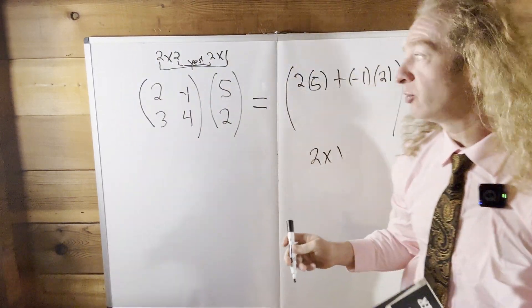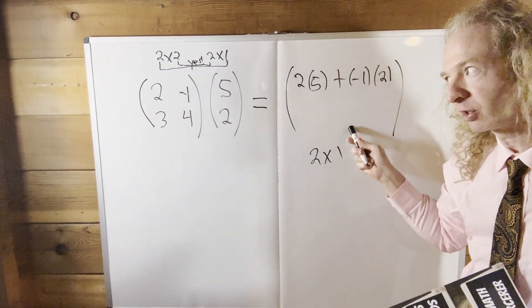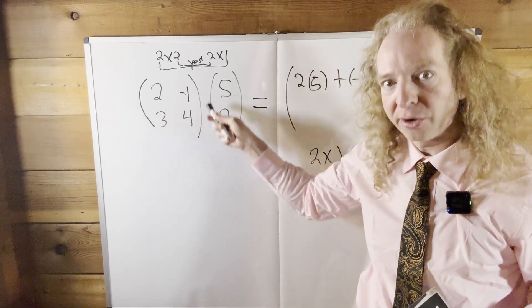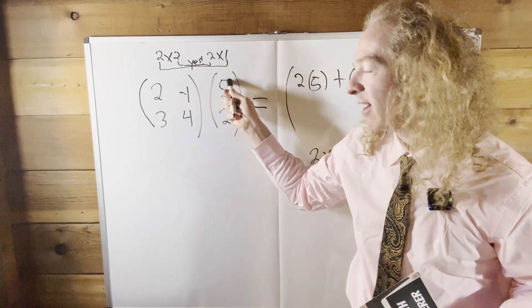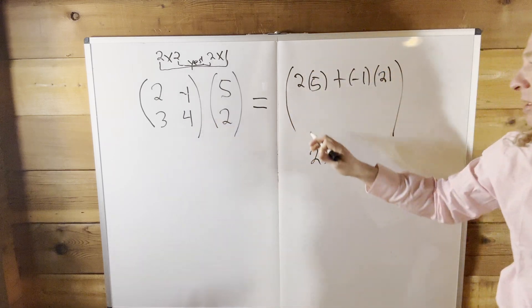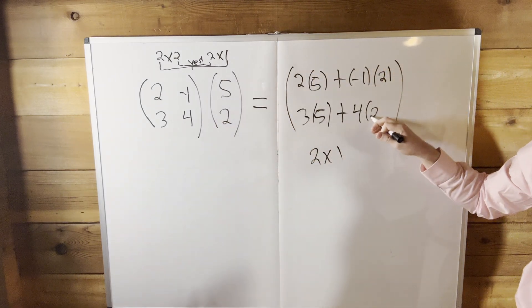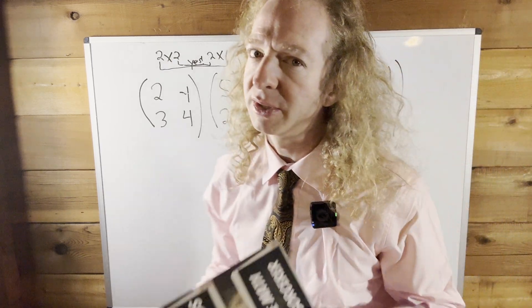Now we're going to the second row, first column. Second row, first column, three times five plus four times two. Super easy once you know how to do it, right? It's hard to learn this. This is one of the hardest things to learn, so it takes practice.